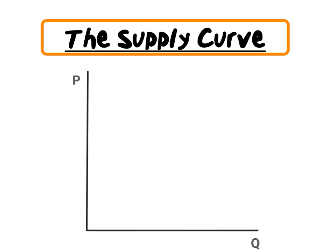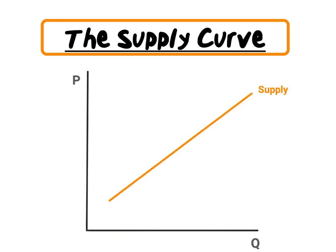Next up, our supply curve. Remember, when we draw demand and supply graphs, price will be on our y-axis and quantity on our x-axis. The supply curve is therefore as follows. Based on the definition and the law of supply, price and quantity should illustrate a positive relationship. In other words, if price increases, quantity supplied would also increase, and if price decreases, quantity supplied must also decrease.